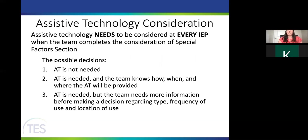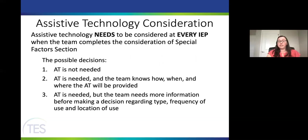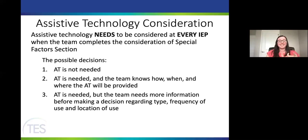According to IDEA, assistive technology needs must be reviewed at every single IEP. In Ohio, Section 2 on the IEP asks whether assistive technology is needed. There are three possible answers: assistive technology is not needed; it is needed and the team knows how, when, and where to implement it; or it is needed but the team needs more information before deciding the type, frequency, and/or location of use.